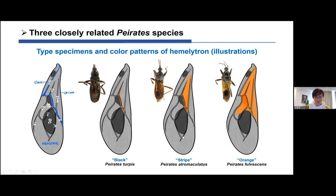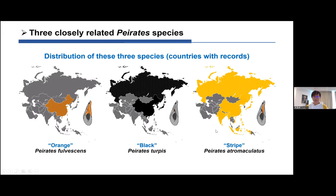In atramarculatus, the orange area is between the C-wing and CuA+M wings on the corium, appearing as a longitudinal orange stripe in the middle of the wing. In phobusens, the orange area is very large, nearly occupying the whole corium and extending to the base of the membrane. We call them informally the black one, the stripe one, and the orange one. Phobusens occurs only in China; terpies, the black one, distributes in northeast China; and atramarculatus, the stripe one, has a much broader distribution from northeast Asia to southeast Asia.